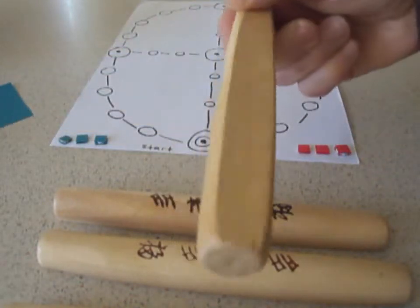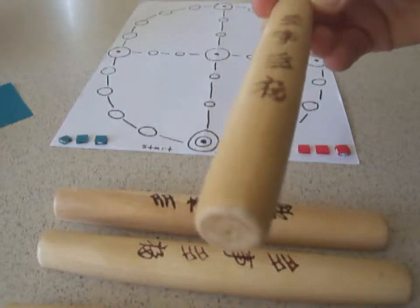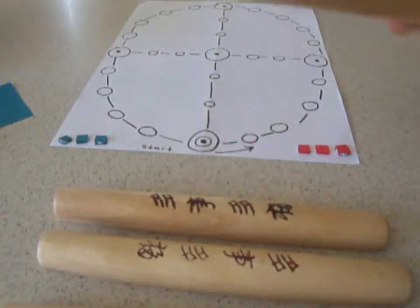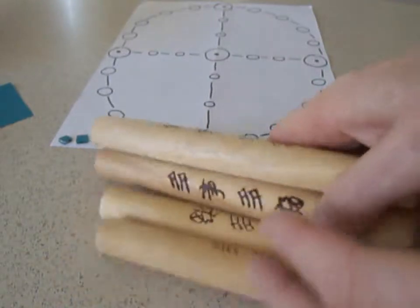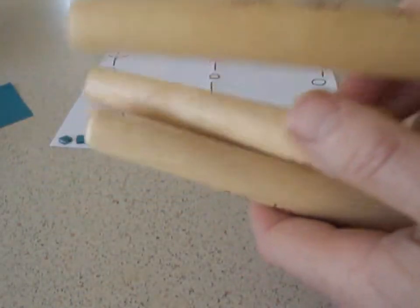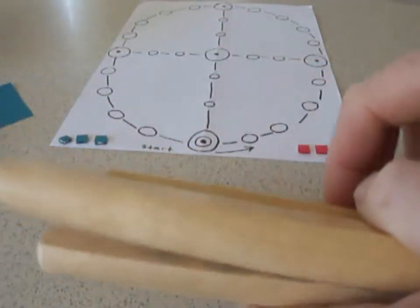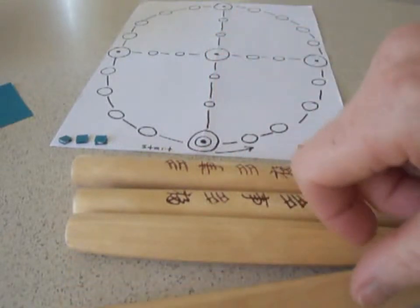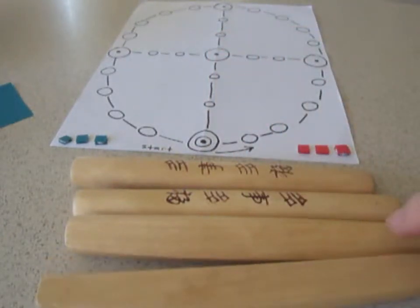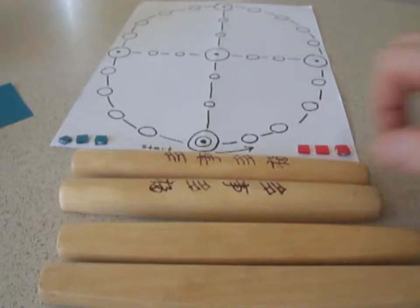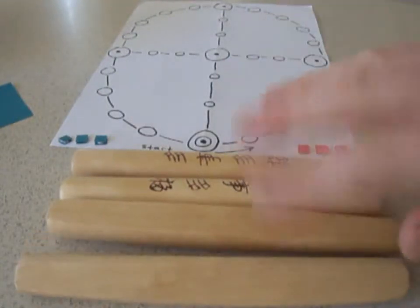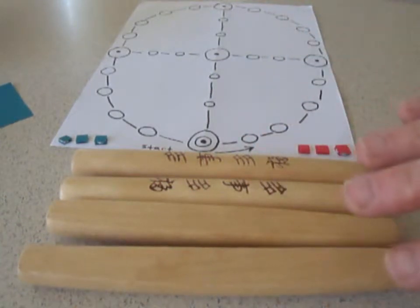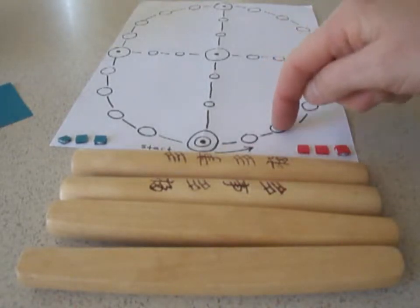And the dice are flat on one side and round on the other. So if you can imagine we're down on the floor, we pick up all the dice and we throw them and they land. Bang, bang, bang, bang. And some land flat side up and some land flat side down. Depending on how many are flat side up or down determines the outcome of the roll and how many spaces you can move.